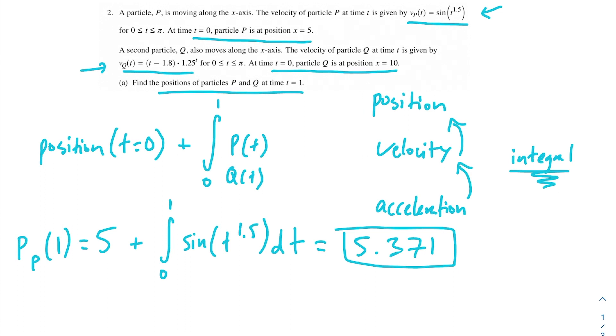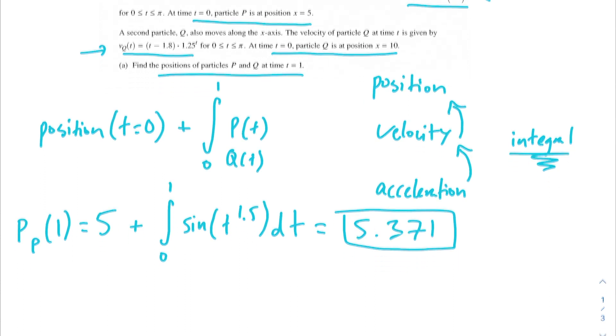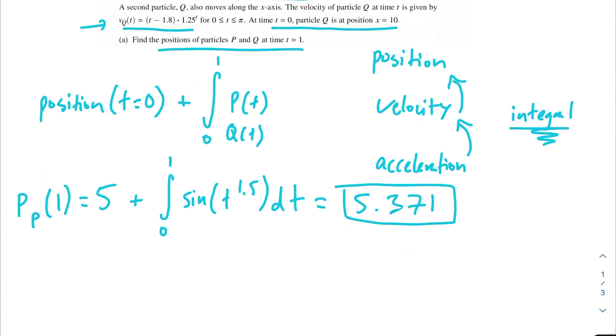We can apply that same concept to find the position of particle Q at time 1. P_Q(1) equals, it's at position 10 at time t equals 0, so 10 plus the integral from 0 to 1 of (t minus 1.8) times 1.25 dt. Since this is a calculator problem, you can just plug this into your calculator. This gives us 8.564.